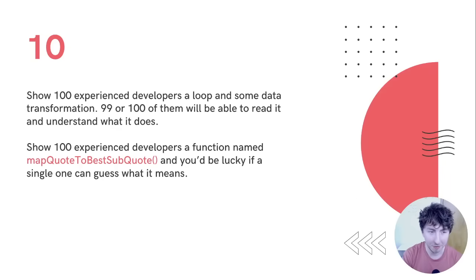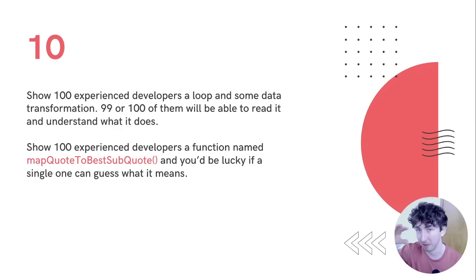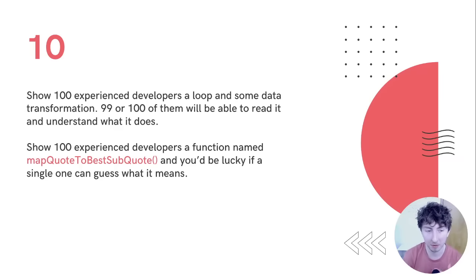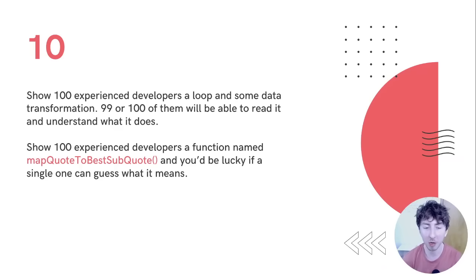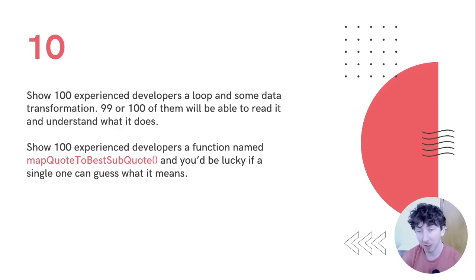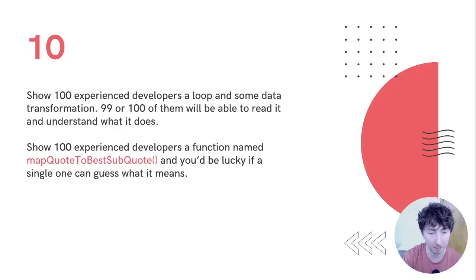If you get a room of 100 experienced developers and show them a basic loop with some data transformation inside, 99 or 100 of them will be able to read it and understand what it does. But if you show the same 100 developers a function called 'mapQuoteToBestSubquote,' you'd be lucky if a single one could accurately guess the actual technical implementation. Code communicates technical concepts well; English really doesn't.